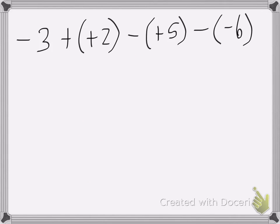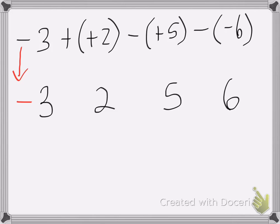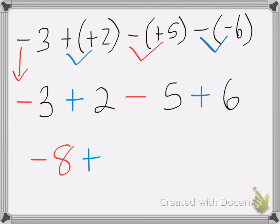Here I have negative three plus a positive two minus a positive five minus negative six. I'll drop the numbers down first: three, two, five, and six. The first is just negative three. Then plus a positive — that's positive. Then minus a positive — the negative always wins, so negative. Then two negative signs — two negatives make a positive. Combining like terms: negative three and negative five is negative eight, plus two plus six is eight. Negative eight plus eight is equal to zero.